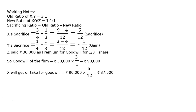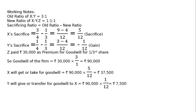X will receive for goodwill — X's capital account is credited — 90,000 multiplied by 5/12, that is Rs. 37,500. Y will transfer for goodwill — Y's capital account will be debited — 90,000 multiplied by 1/12, that is Rs. 7,500.